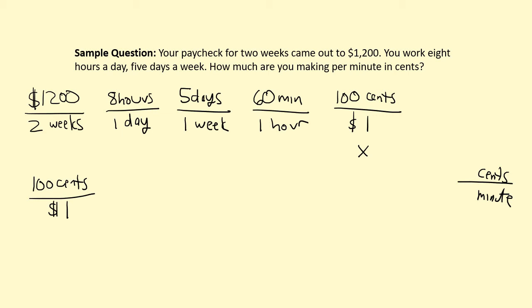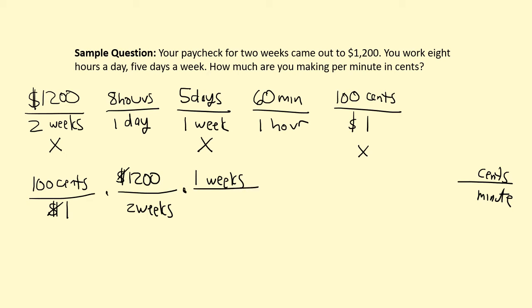I want to keep those cents, but I don't need dollars in my answer, so my next task is to cancel out the dollars. The first rate — $1,200 per two weeks — will let me do that, with dollars on top to cancel the dollars on the bottom. Next, I want to get rid of weeks, since cents per minute has nothing to do with weeks. I'll use the middle rate — five days per one week — flipped so that one week is on top to cancel out weeks.